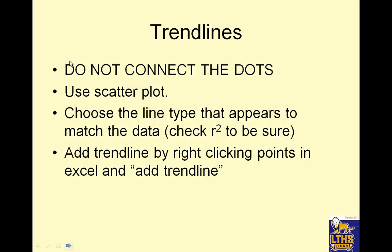Trend lines do not connect the dots. Use a scatter plot. Choose the line type that appears to match the data. Check the R squared to be sure. Add a trend line by right-clicking points in Excel and clicking on add trend lines.